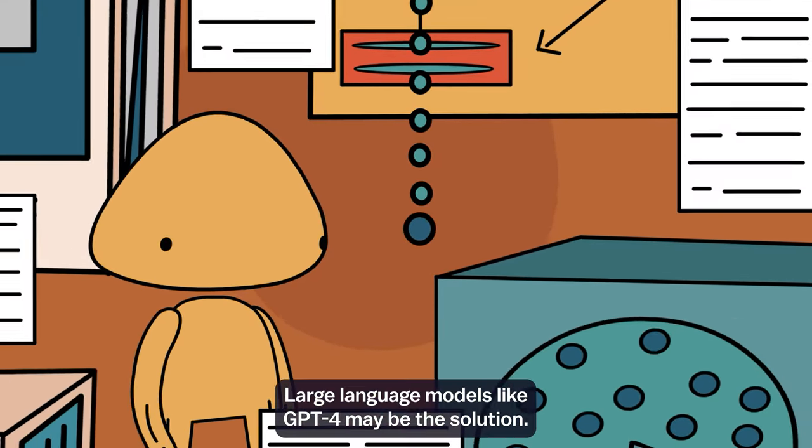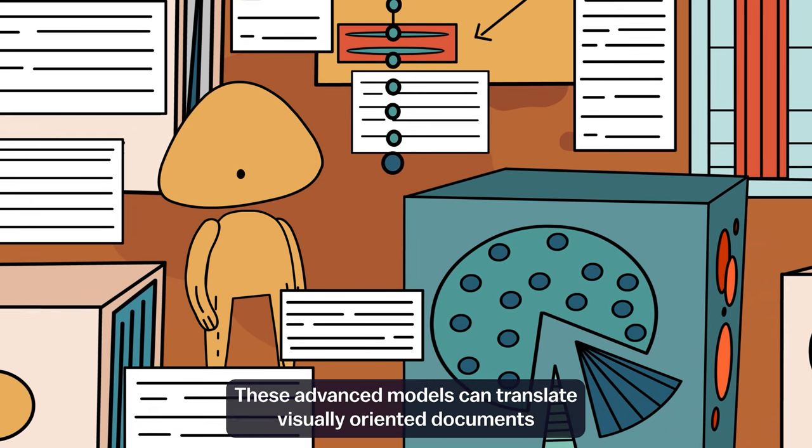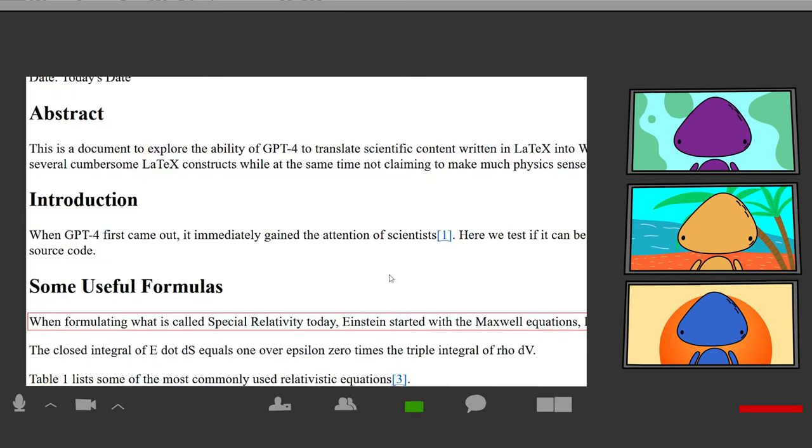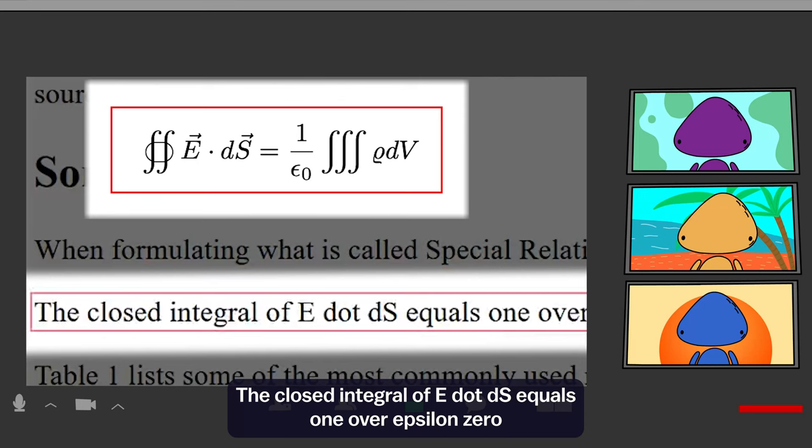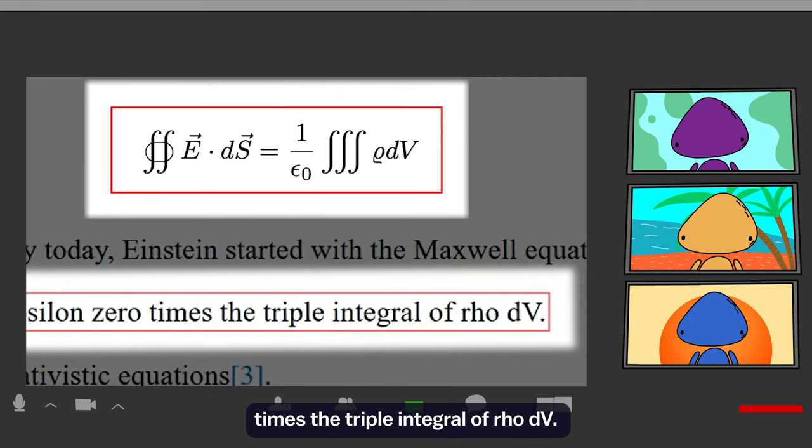Large language models like GPT-4 may be the solution. These advanced models can translate visually oriented documents into narratives, ensuring that every piece of information is accessible to all.